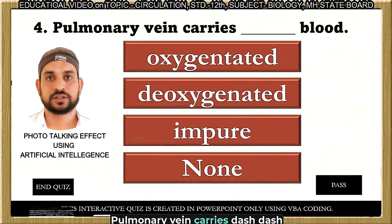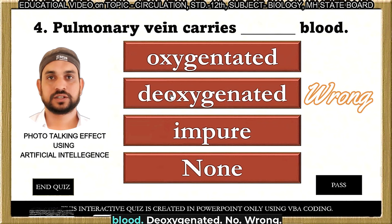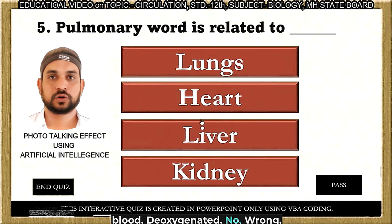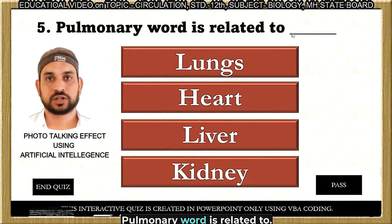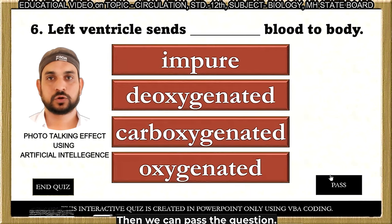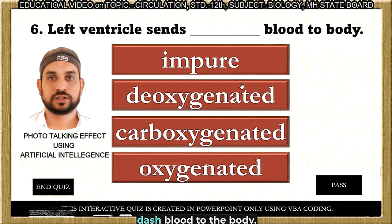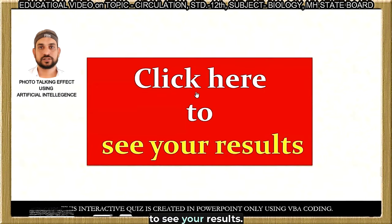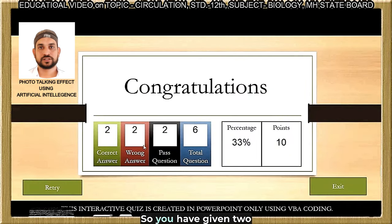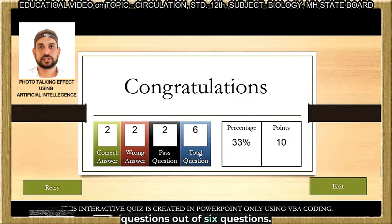Question: The pulmonary vein carries what type of blood? Answer given: Deoxygenated. Wrong. Question: The pulmonary word is related to? The student doesn't know, so we pass the question. Question: The left ventricle sends what type of blood to the body? The student doesn't know this, so we pass the question.